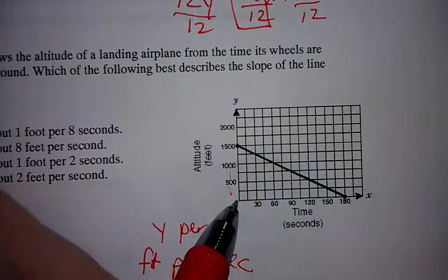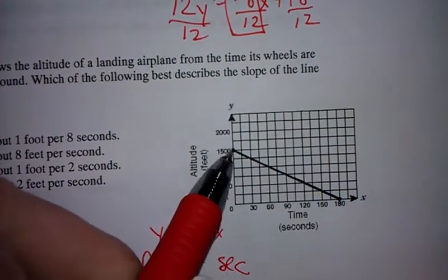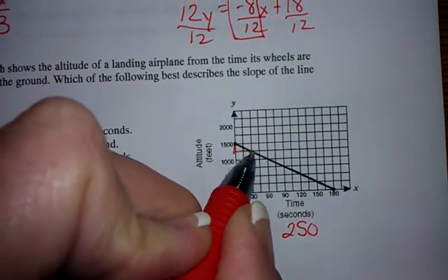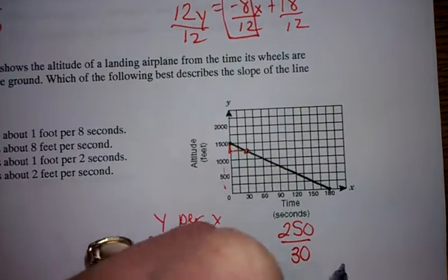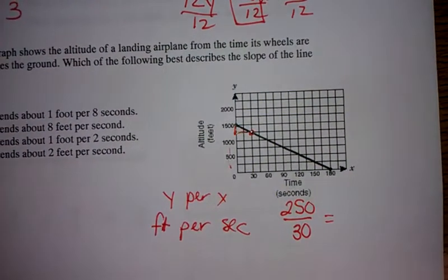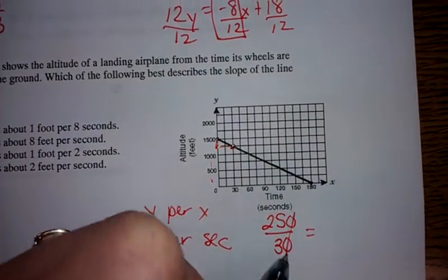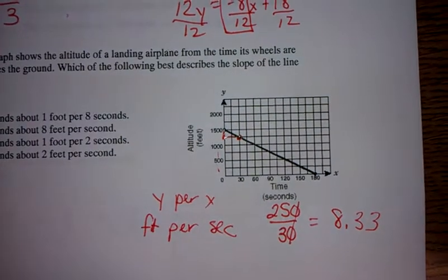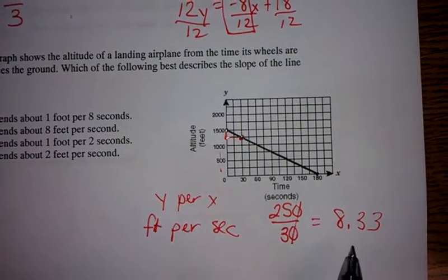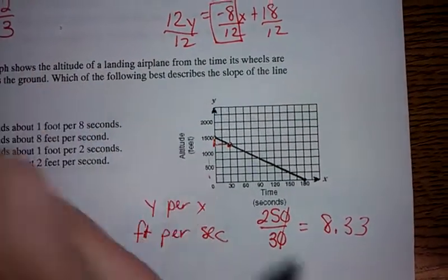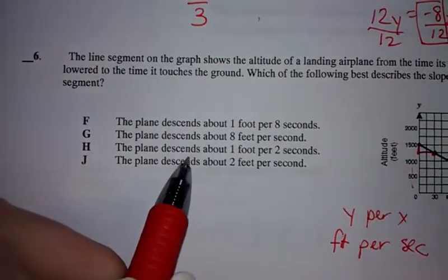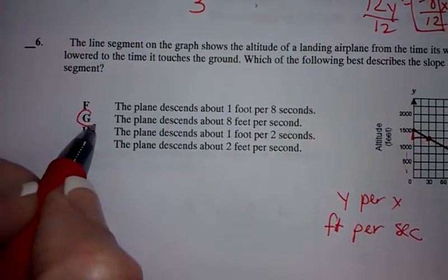If I look here, I'm going, each line is 250. So I'm going down 250 right here and over 30. Let's see if I even did that right here. If I divide that out ends up being 8.0333. So we are going down 8 feet. We're going down 8 feet per second. Well, it's 8.3, but they're rounded here. So it's 8 feet per second. The answer should be G.